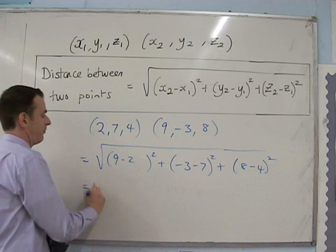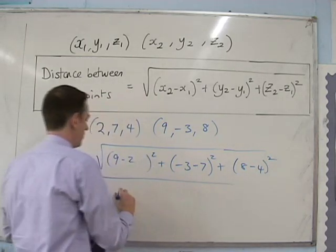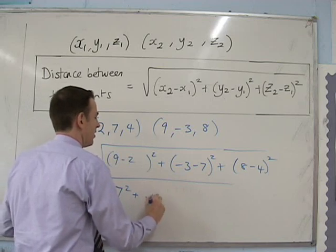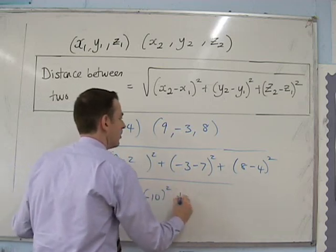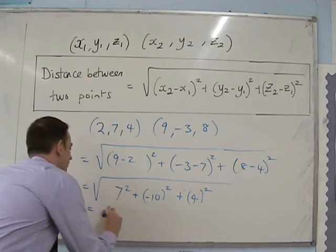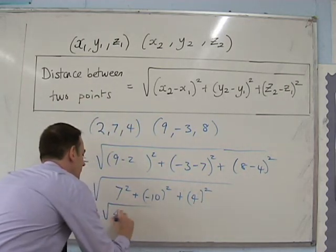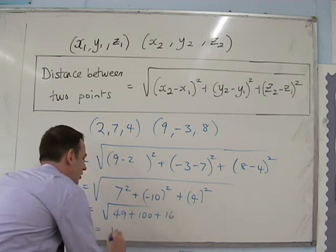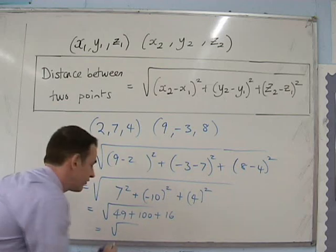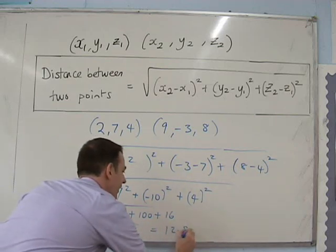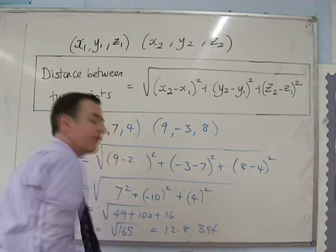This is going to be the square root of 7 squared plus minus 10 squared plus 4 squared, which will be the square root of 49 plus 100 plus 16, which turns out to be the square root of 165, or 12.8 to 3 significant figures.